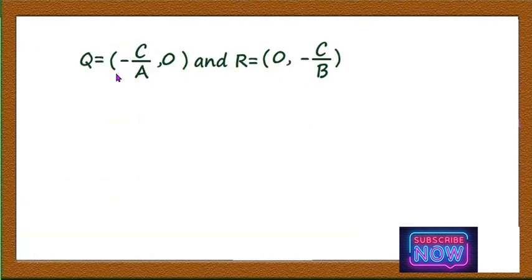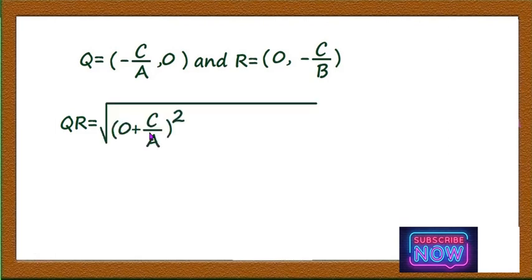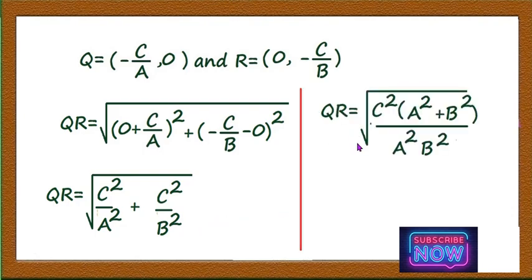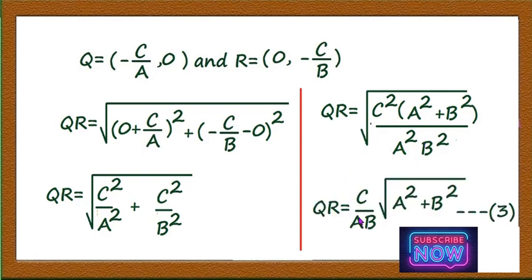Now let us find the distance QR. With Q = (−c/a, 0) and R = (0, −c/b), applying the distance formula: QR = √[(0 − (−c/a))² + (−c/b − 0)²] = √[c²/a² + c²/b²]. Taking LCM as a²b², QR = √[c²(a² + b²) / (a²b²)] = (c/ab) × √(a² + b²). Call this equation 3.